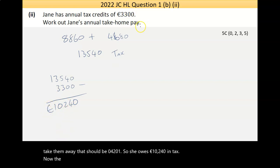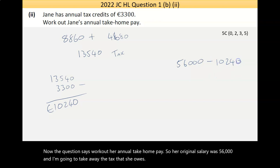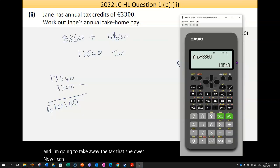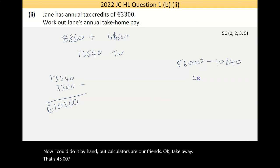Now the question says work out her annual take-home pay. So her original salary was 56,000. I'm going to take away the tax that she owes. Now I could do it by hand, but calculators are our friends. Take away, that's 45,760. That's her take-home pay.